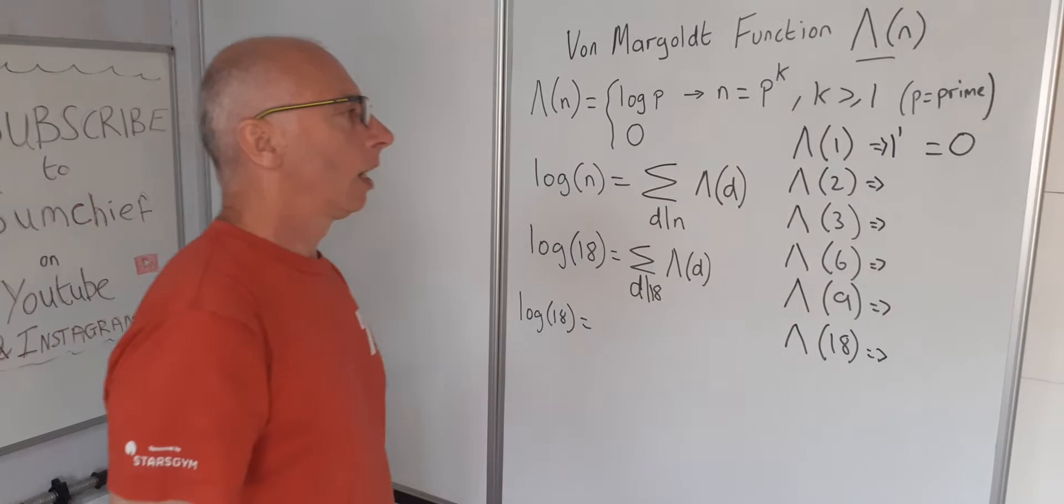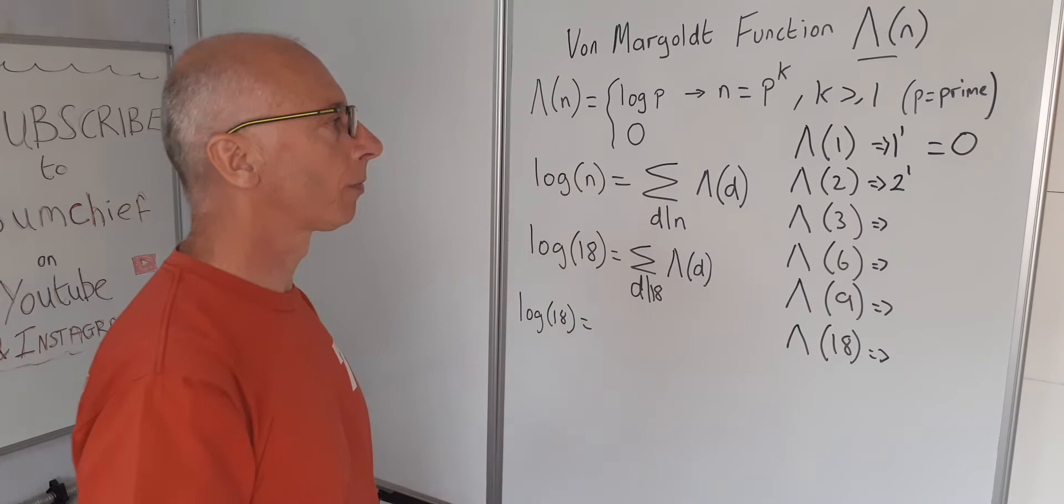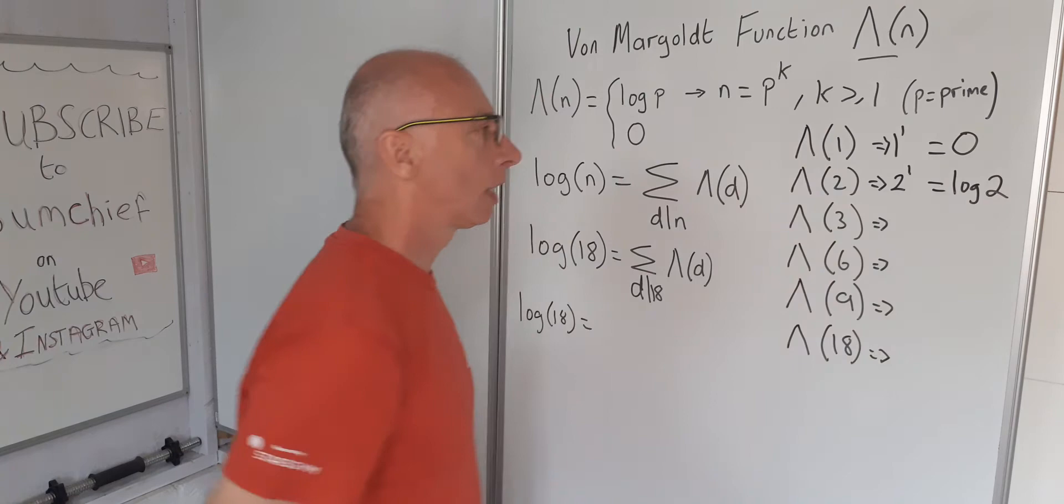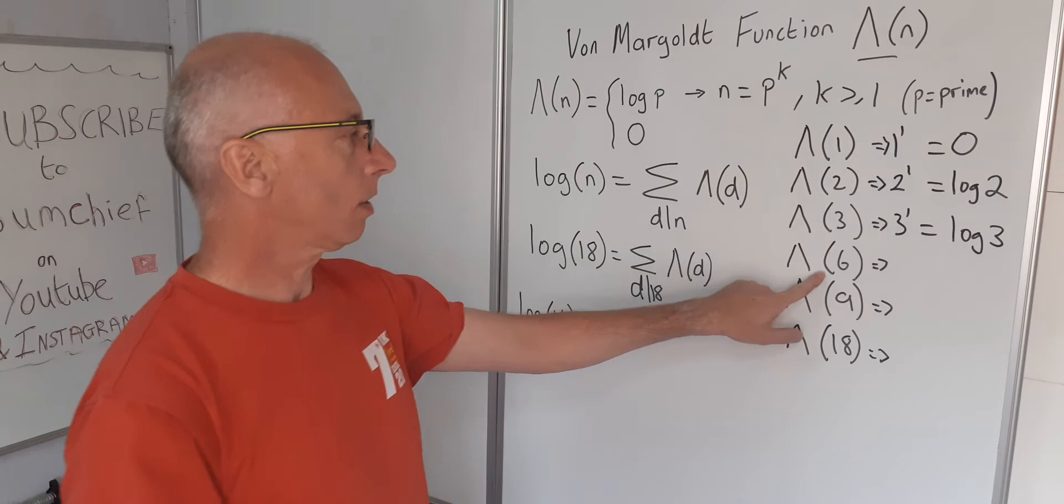2. So 2 can be a prime number for the base here P. So 2 to the power of 1. As long as k is 1 or more, in which case the von Mangoldt function for 2 is log of 2. Same for 3, 3 to the power of 1, so we get log of 3.